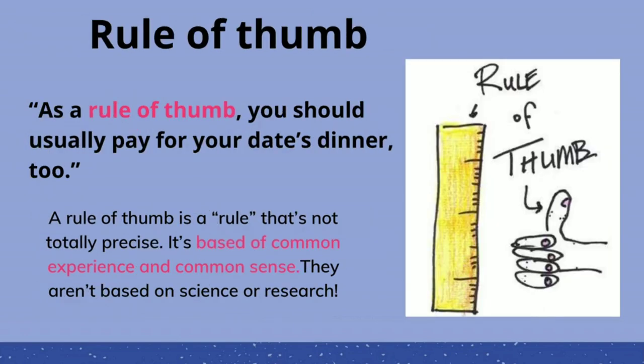Rule of thumb. 'As a rule of thumb, you should usually pay for your date's dinner too.' A rule of thumb is a rule that is not totally precise. It's based on common experience and common sense — not based on science or research.